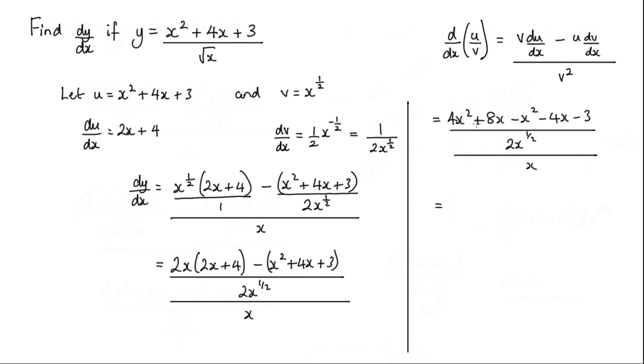Now we can cancel some terms here. We've got 4x² - x², so we've got 3x². 8x - 4x, that's going to be +4x. We've got -3.